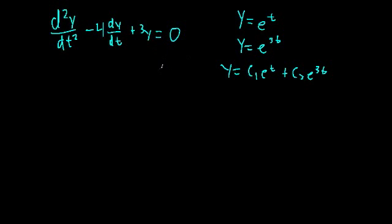Let's recap what we did in the last video. We had this differential equation and we found that it had two linearly independent solutions: e to the t and e to the 3t. We said that the general solution to this differential equation is a linear combination of these two solutions — a constant times one solution plus another constant times the other solution.